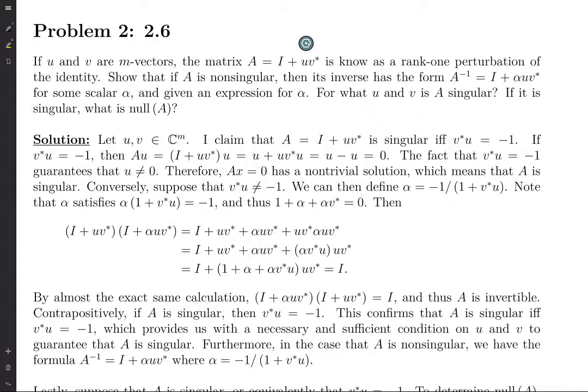In any case, all of the columns are scalar multiples of each other, and so you have rank one, assuming that these vectors are non-zero. So we have a rank-one matrix and we add it to I, and so we get what is called a rank-one perturbation of the identity.